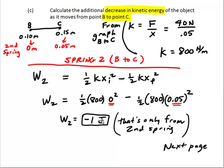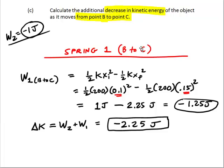But there's more. You also have to take into account the work done by the first spring. And the first spring, you do go from 0.1 to 0.15 because it is already compressed 0.1. From point B to point C, that spring is already compressed. So you're using the same formula to get the work done by this spring, 1 half kx squared minus 1 half kx squared. First one's initial, second one's final.